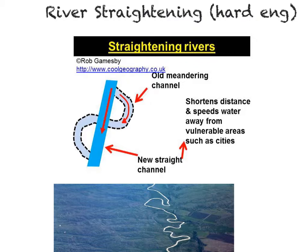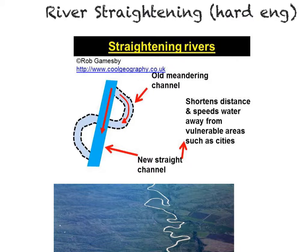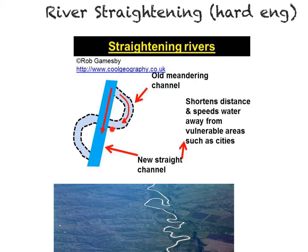A simple diagram shows the idea: we have a river which meanders, like the Mississippi does. Humans then straighten the river channel through a variety of methods, normally by excavating a new channel which is typically concreted or reinforced with other structures to keep it in place. The thinking behind this is that it shortens the distance and speeds up water flow through the area, lowering the risk of flooding locally. However, it does typically cause problems further downstream as more water arrives at a greater speed.